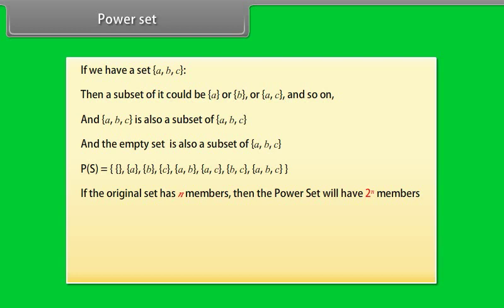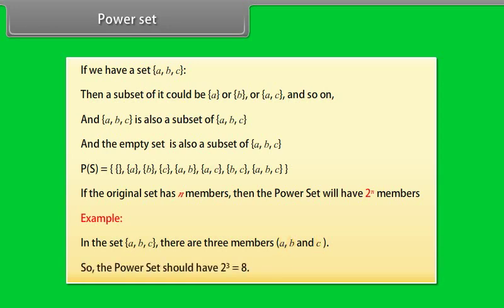Example. In the set A, B, C, there are three members A, B, and C. So, the power set should have 2 raised to power 3 equals 8, which it does.